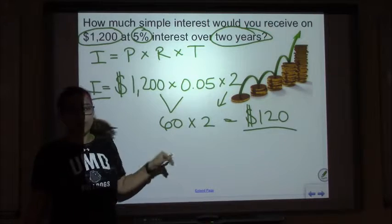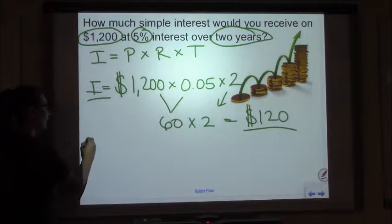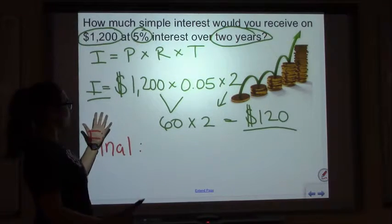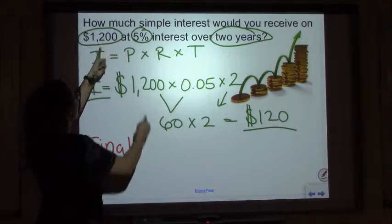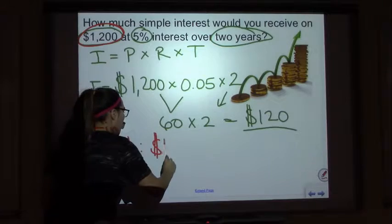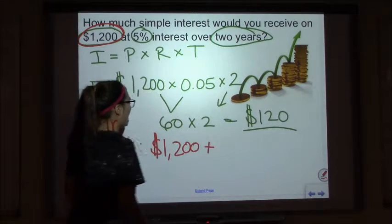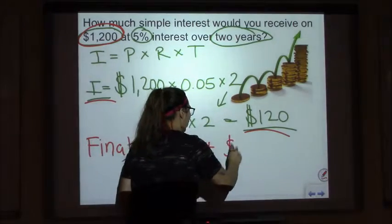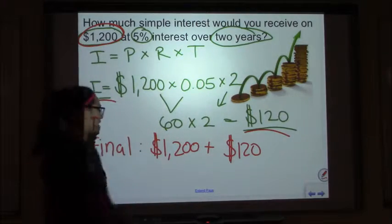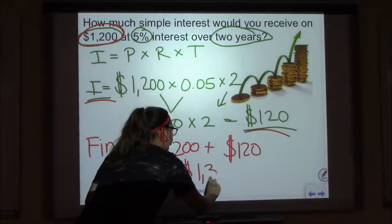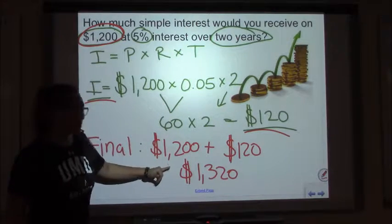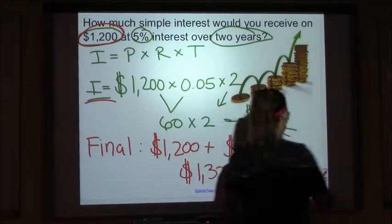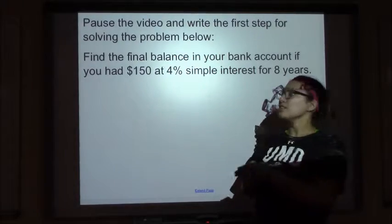So our interest is $120 — that's how much we made for putting twelve hundred dollars in the bank for two years. To find the final balance, we take our base of twelve hundred dollars and add on our interest of a hundred and twenty dollars. Adding those together, we get one thousand three hundred and twenty dollars in our bank account.